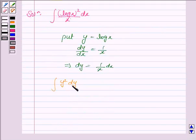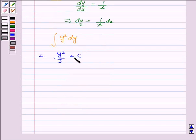Now here n is 2. So this becomes y to the power 2 plus 1 that is 3 upon 3 plus c. Now we substitute the value of y.